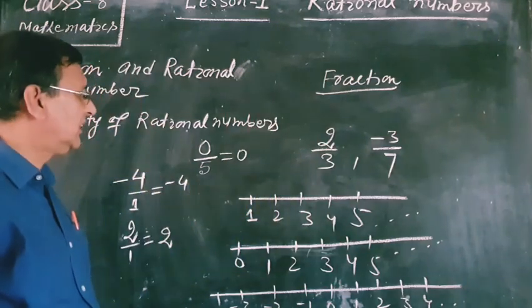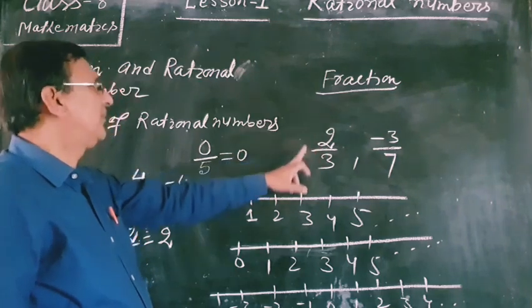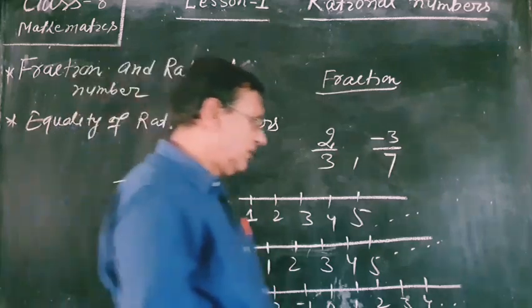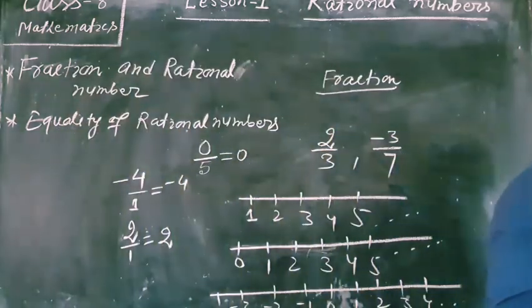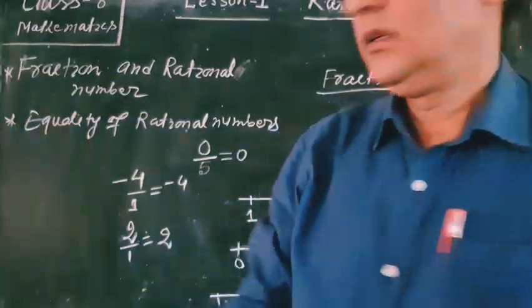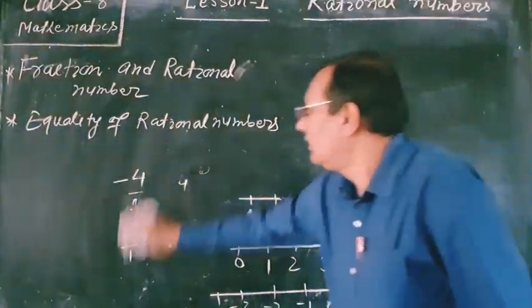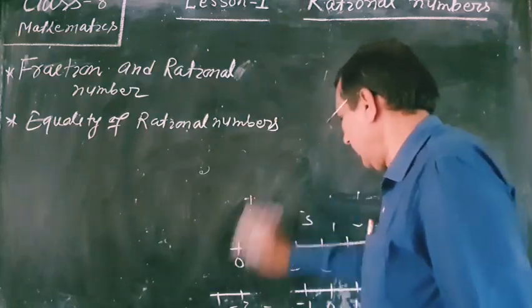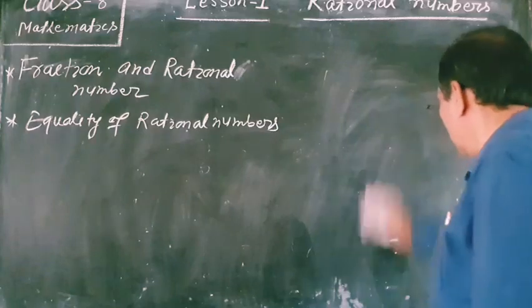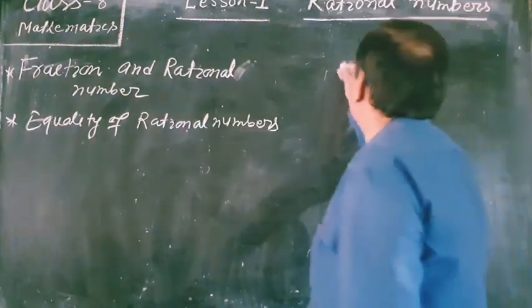We have already discussed the difference between a fraction and a rational number. Now the second topic is equality of rational numbers.